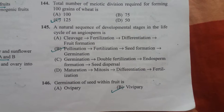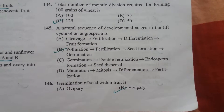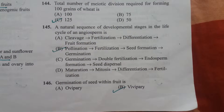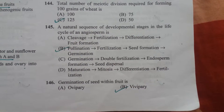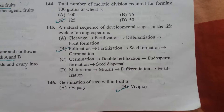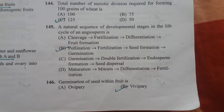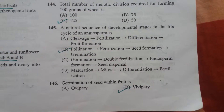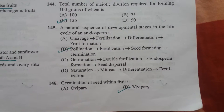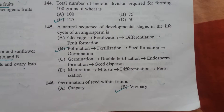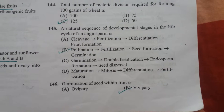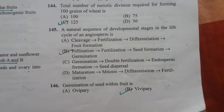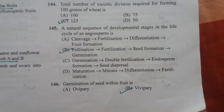The natural sequence of developing stages in the life cycle of angiosperm: pollination, fertilization, seed formation, and germination. Germination of seeds with viviparous (vb peri) germination.